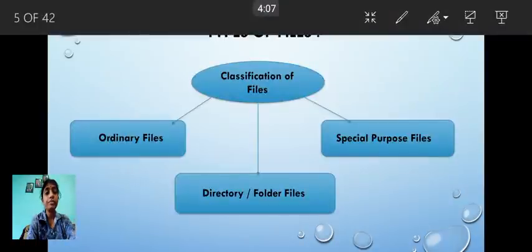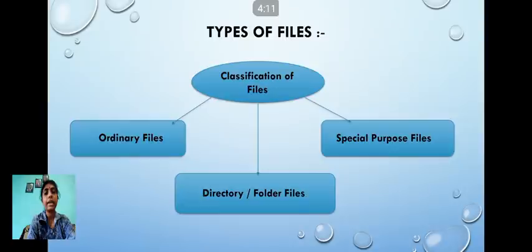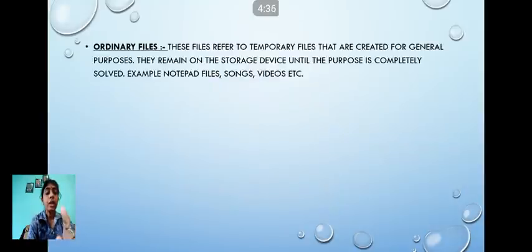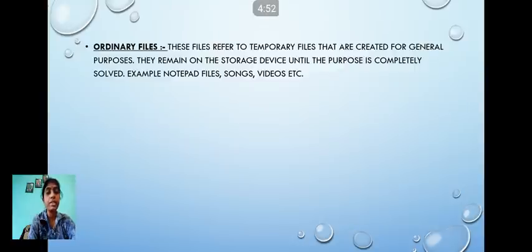Files can be categorized under three different types: the first is ordinary files, the second is directory files, and the third is special purpose files. Ordinary files refer to temporary files created for general purpose. They remain on the storage device until the purpose is completely solved. Examples include notepad files, songs, or videos.